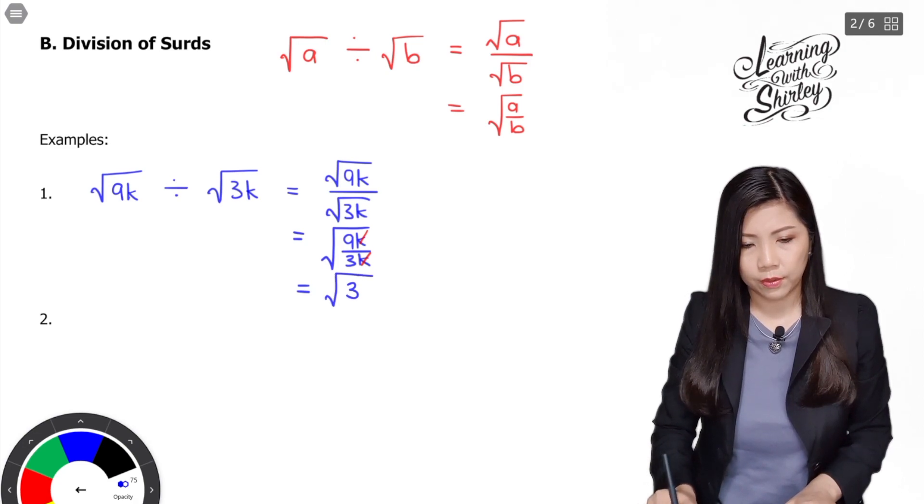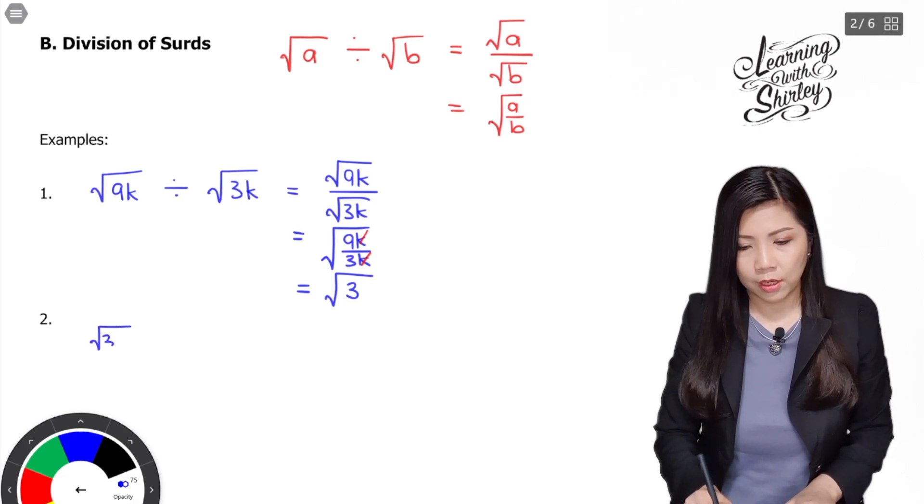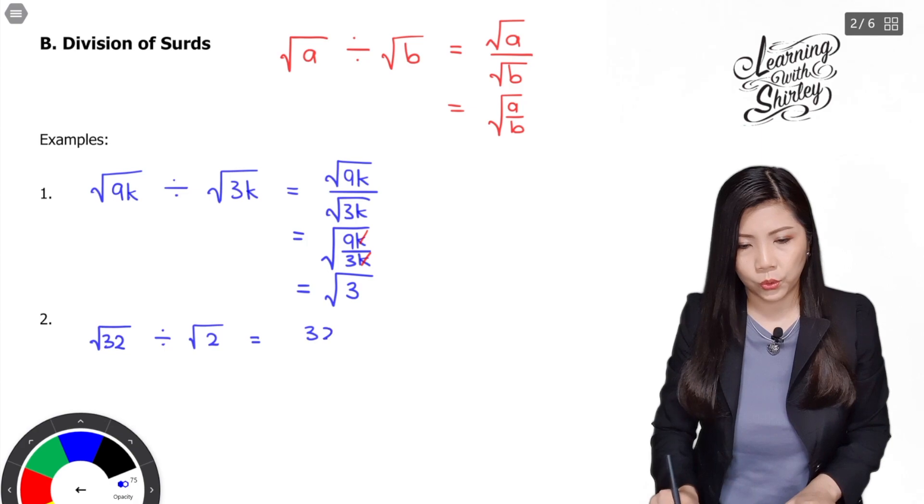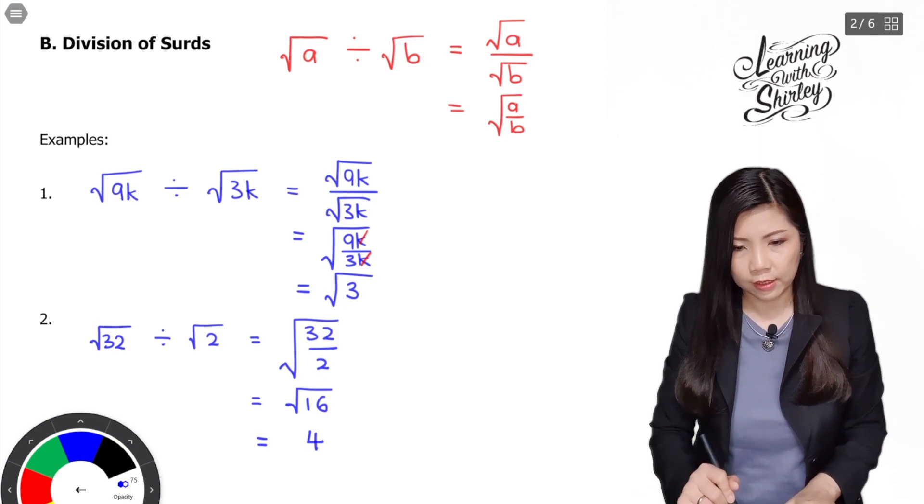Let's look at another example. Surd 32 divided by surd 2, and it's equal to surd 32 over 2, so equals surd 16, and it's equal to 4. So that's the answer.